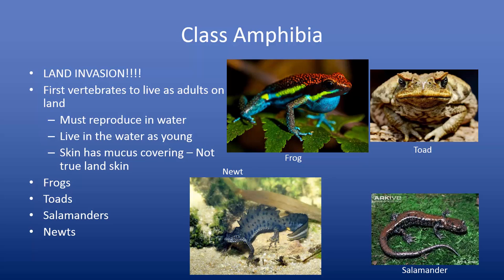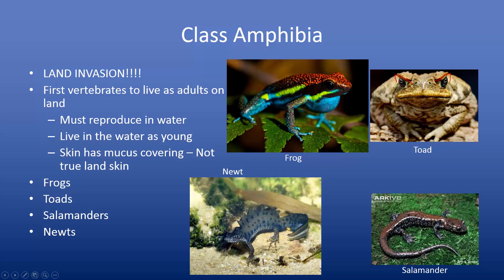Our next group is the toads — this guy over here. Very similar to frogs, but slightly different in body shape and eye shape. In a typical frog the eyes are very round, whereas on a toad the eyelids and the area around them are typically more triangular in shape — that's a generality, not every case. Also, toads are typically a little more stout, a little fatter than their frog cousins. And then we have the newt and finally the salamander. So those are our four main types of amphibians: frogs, toads, newts, and salamanders.